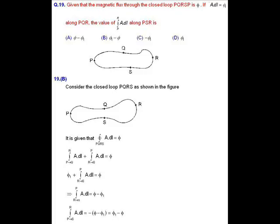By taking parts along PQRSP respectively, we will get line integral from P to R A dot dl plus line integral from R to P A dot dl equals to phi. Given that the line integral from P to R along PQR is phi 1 plus line integral from R to P along RSP A dot dl equals to phi.